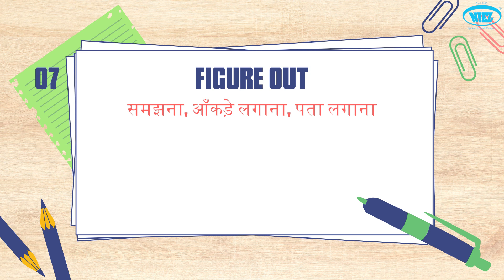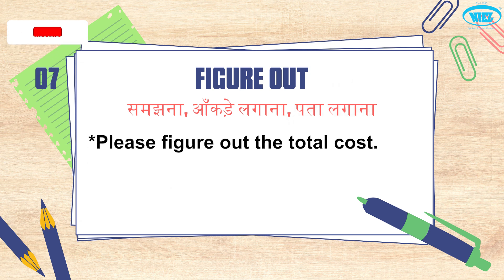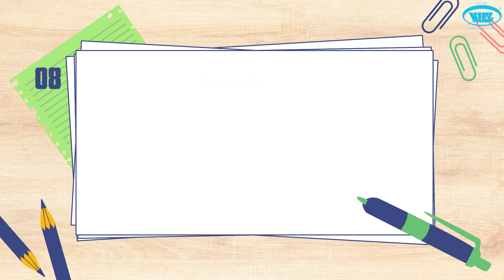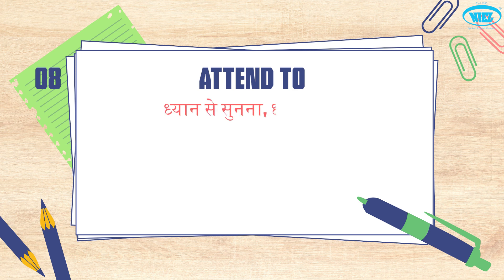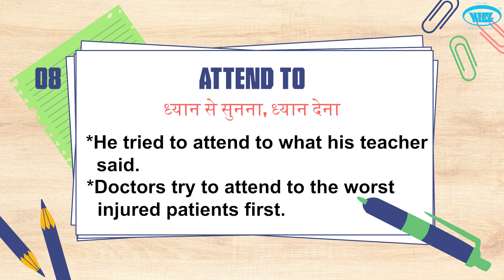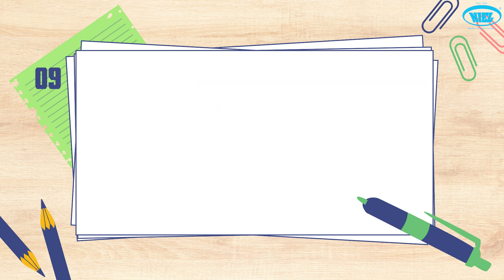'Figure out' means to understand, calculate, or find out about something. For example: 'Please figure out the total cost.' And: 'Could you please help me figure out this problem?' Next comes 'attend to', which means to listen carefully or to pay attention. For example: 'He tried to attend to what his teacher said.' And: 'Doctors try to attend to the worst injured patients first.'